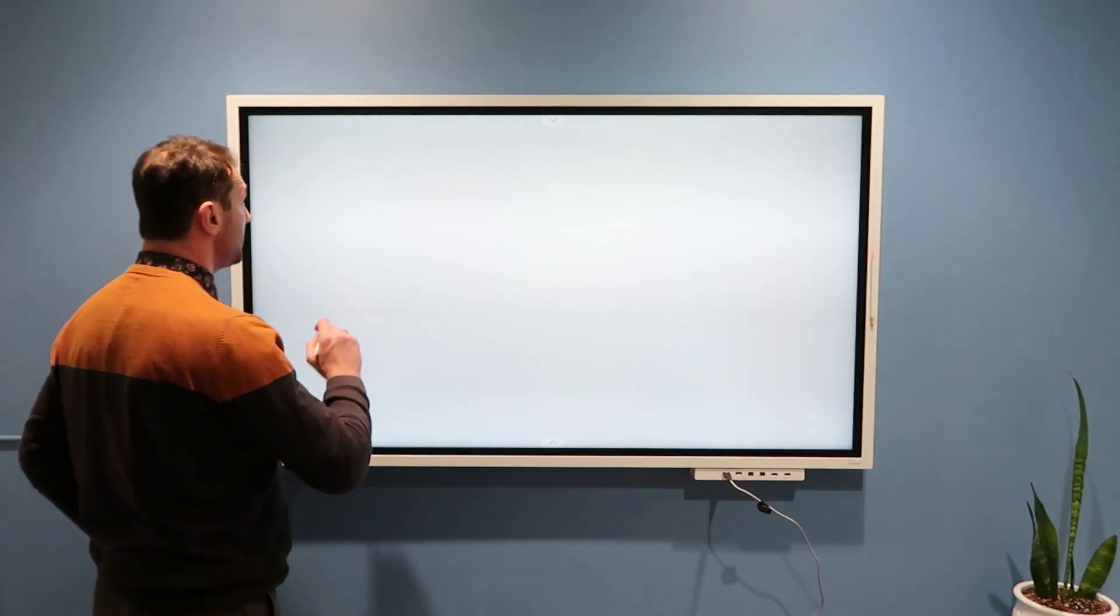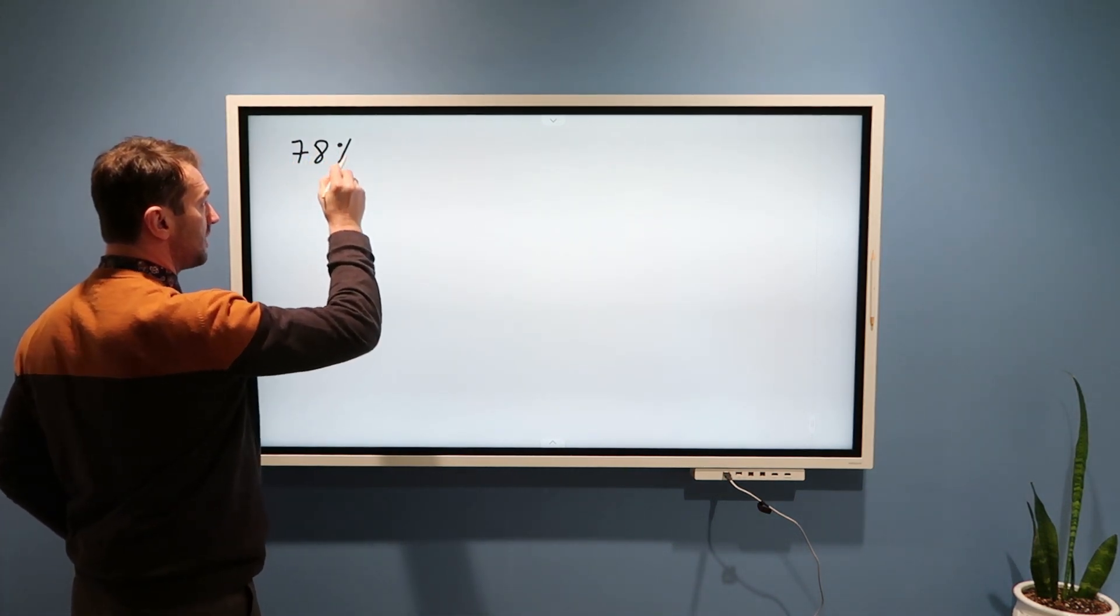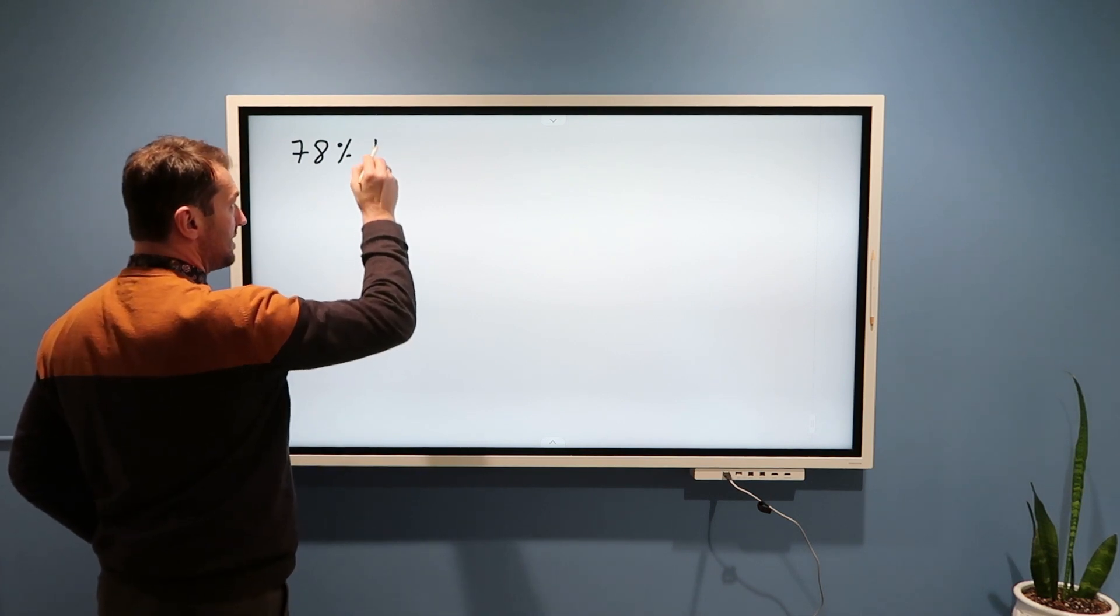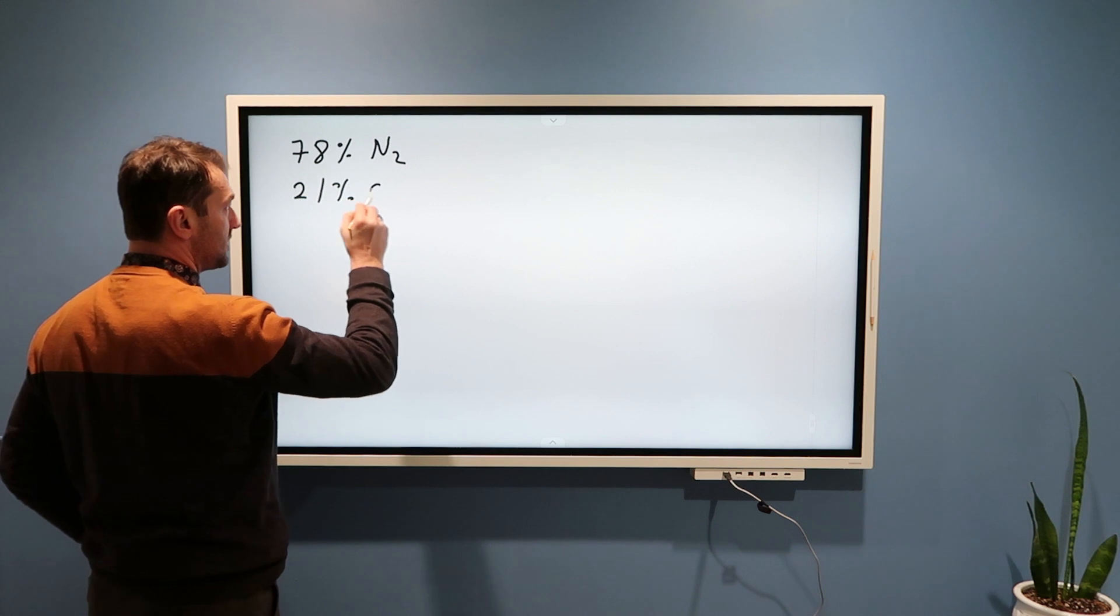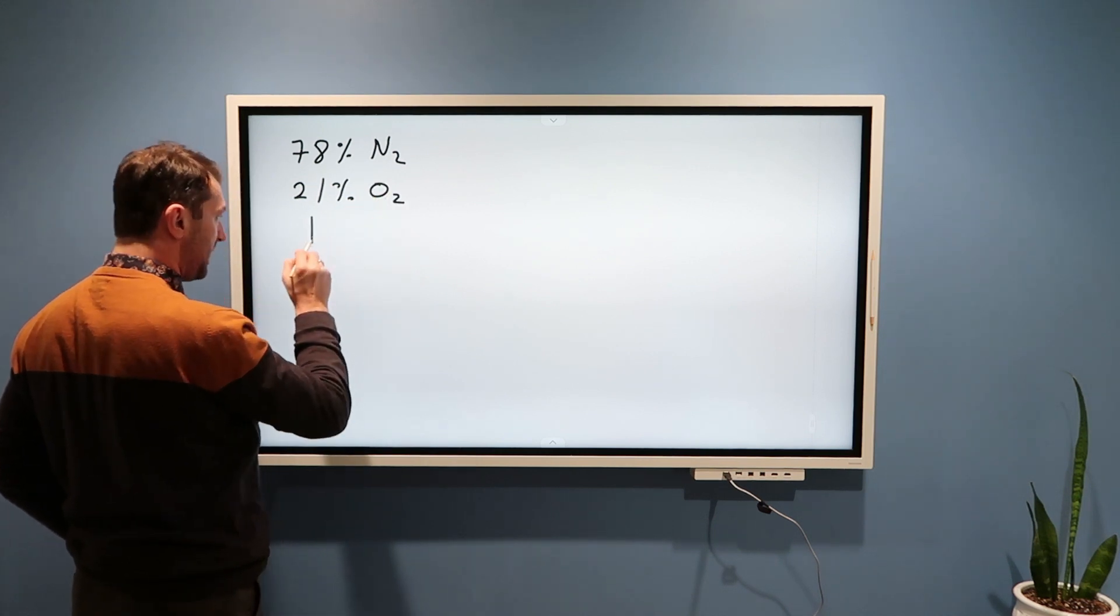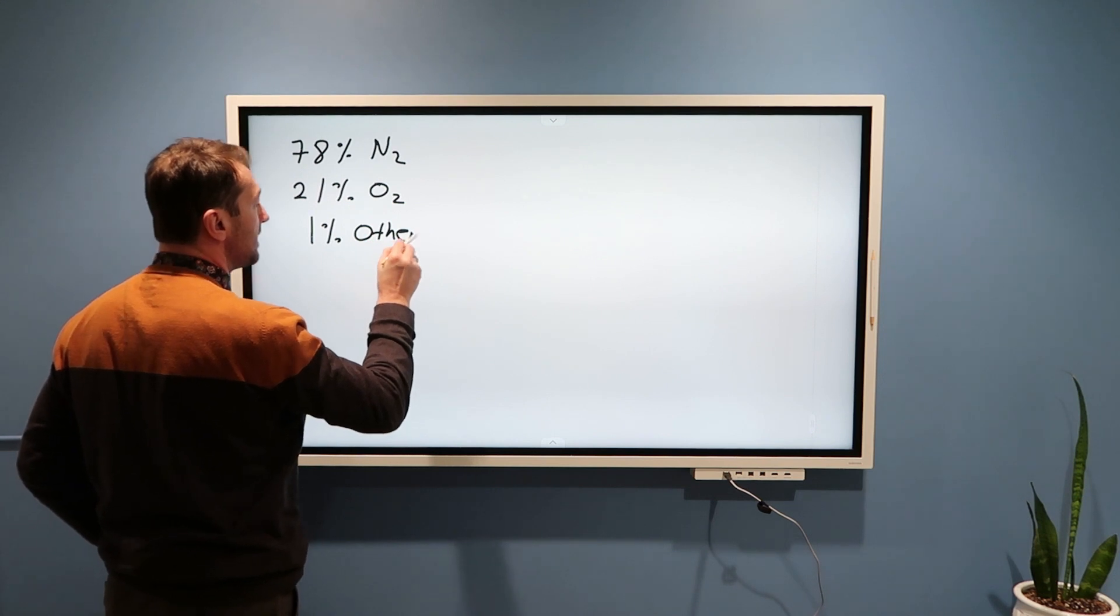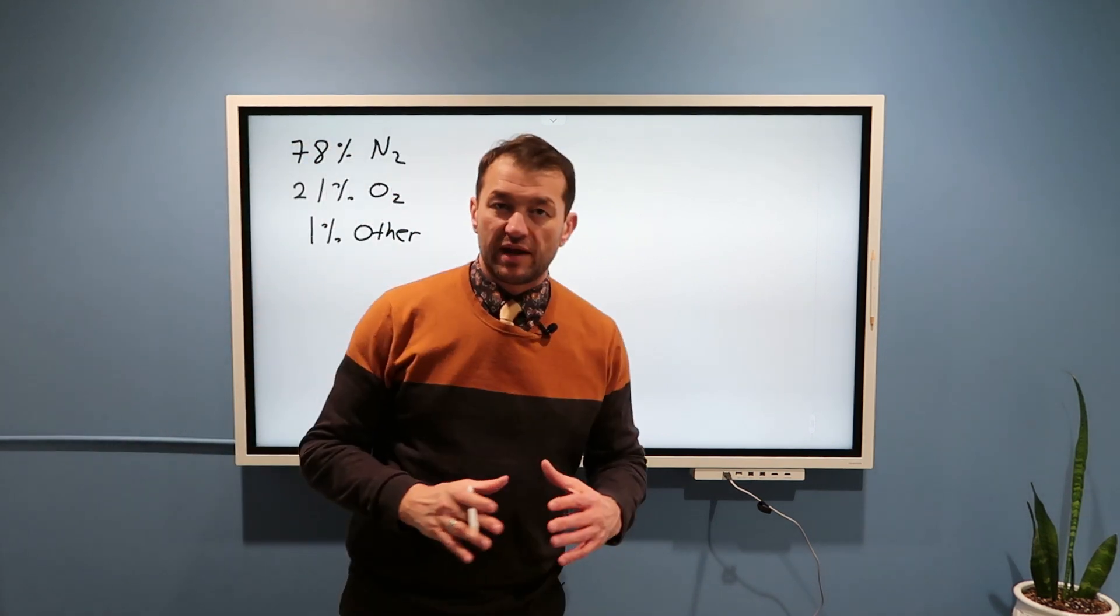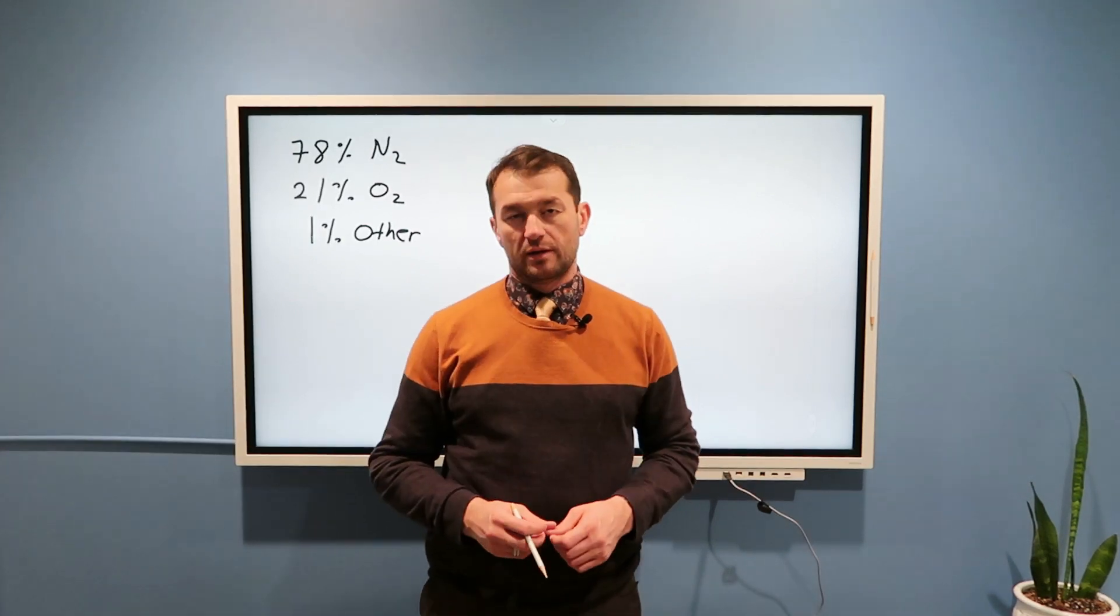In my previous videos, I described how 78% of the air that we breathe is nitrogen N2, 21% is oxygen O2, and 1% is other gases. These other gases were mainly argon, and then CO2, water vapor, and so on.